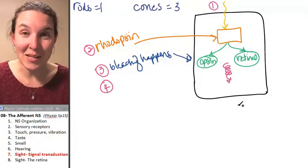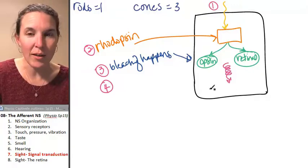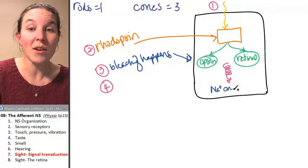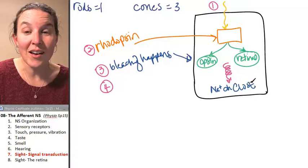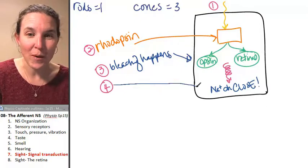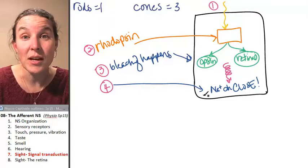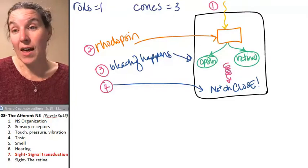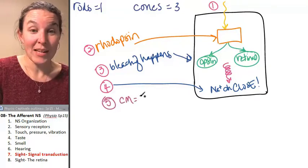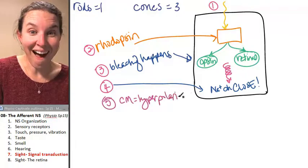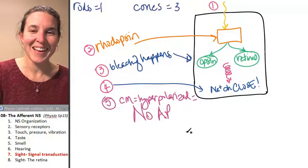We get a second messenger cascade. And the end result of the second messenger cascade is, take a deep breath, sodium channels. What do you think? Well, of course you think they open. No, they close. What? That was number four. So you bleach rhodopsin, and you cause sodium channels to close. And guess what that does? That hyperpolarizes. This is number five. The cell membrane is hyperpolarized, which means are we going to get an action potential? No action potential.